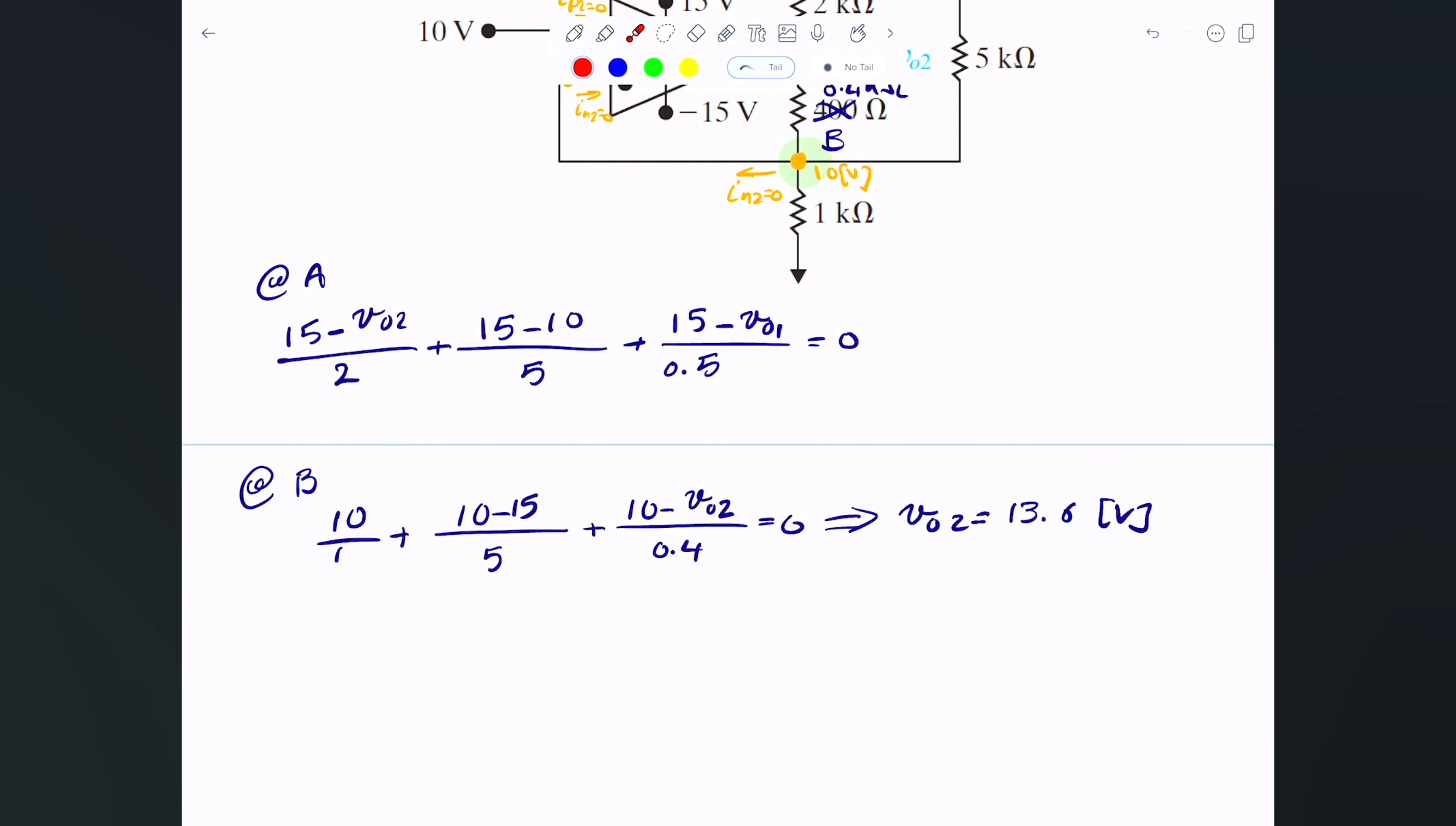Now we take this value and substitute it right here, and that will give us what V output 1 is. This value will give me 15 minus 13.6 volts divided by 2 plus 5 divided by 5 plus 15 divided by 0.5 equals V output 1 divided by 0.5. That will give me what V output 1 is: 15.85 volts.